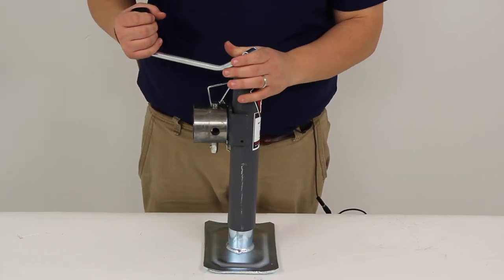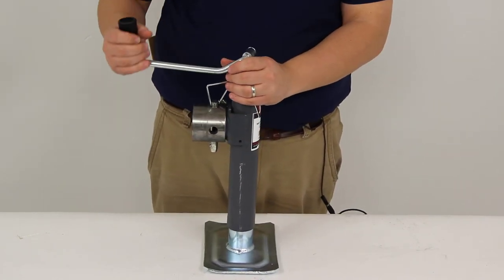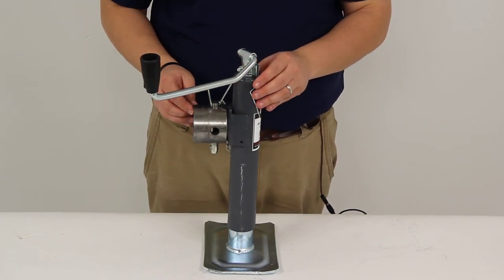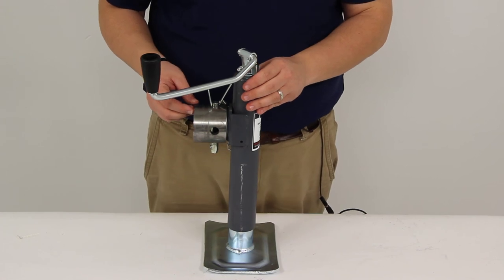Now this is rated with a lift capacity of 7,000 pounds. And that's going to complete today's review of part number BD198100. That's the Bulldog Trailer Jack rated at 7,000 pounds.